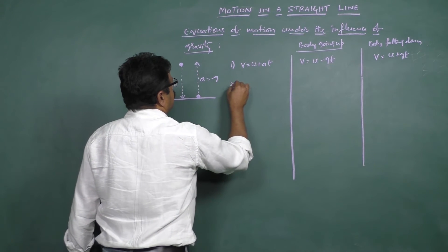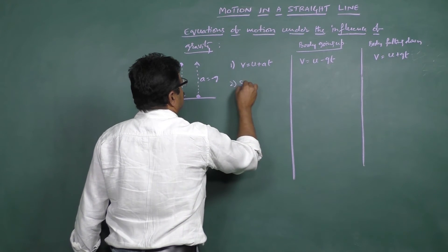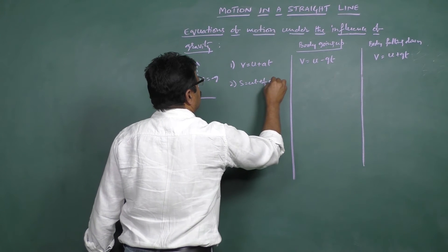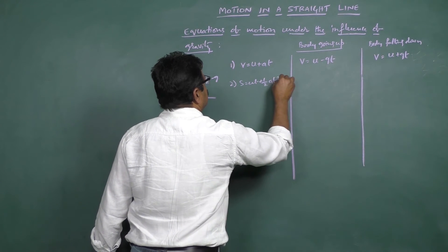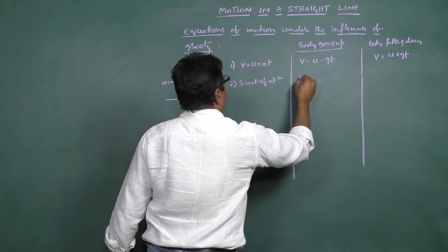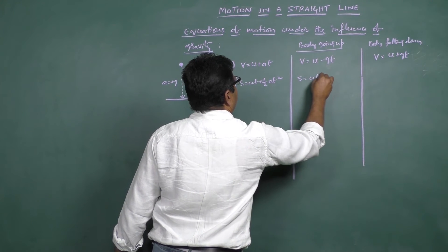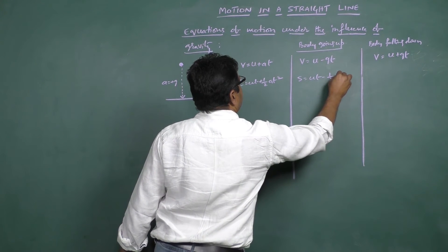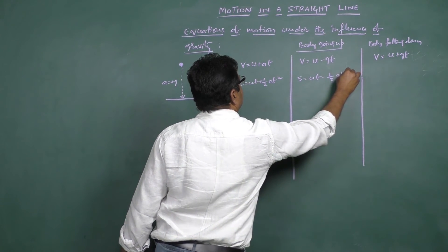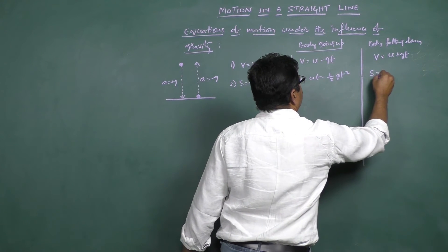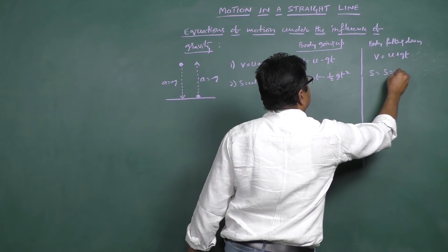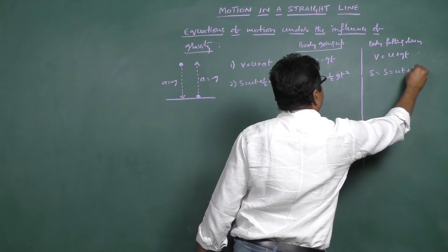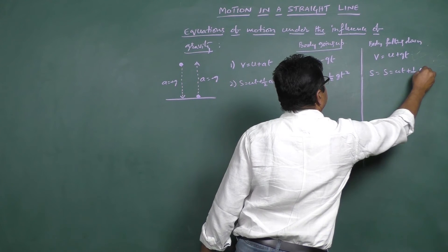The second equation is s = ut + ½at². When moving upwards, this becomes s = ut minus ½gt². When the body is moving downwards, it comes out to be s = ut plus ½gt².